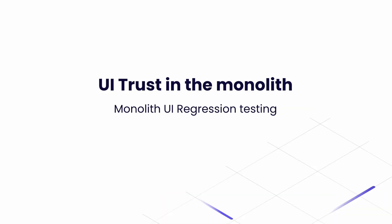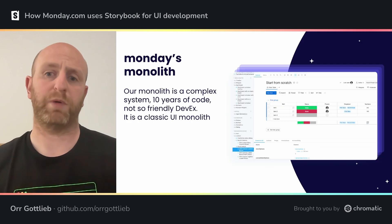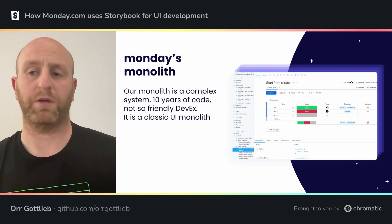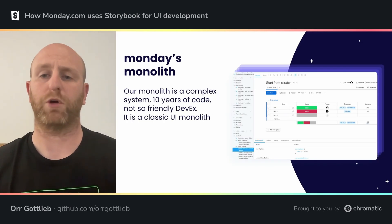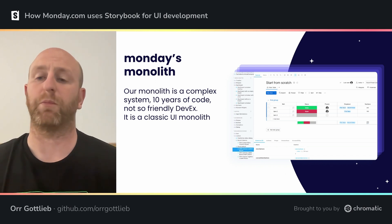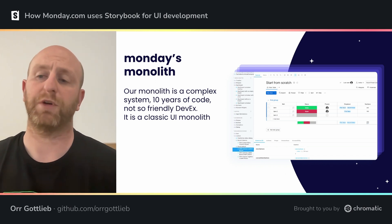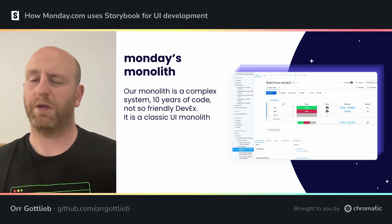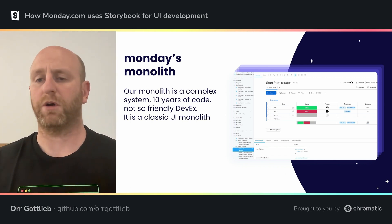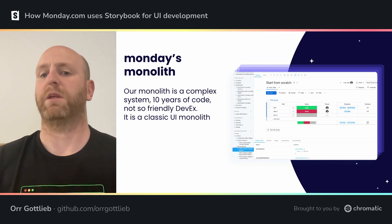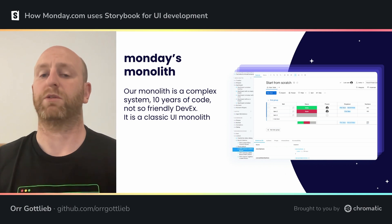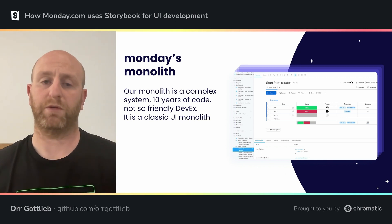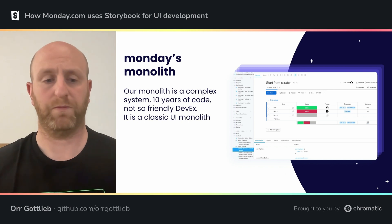So what is our monolith? We've been around for about 10 to 12 years now, and we have a huge monolith with technologies that vary from Backbone and CoffeeScript to modern React with TypeScript. The developer experience there can be really hard, and sometimes it takes tons of time to get acquainted with what's in the monolith itself. This is where Storybook comes to our aid.